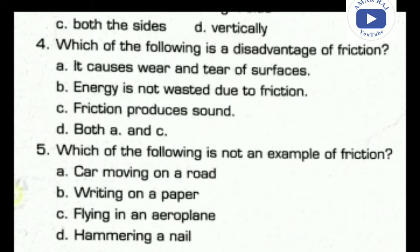Question number five: which of the following is not an example of friction? A car moving on road experiences friction. Writing on paper uses friction between the pen or pencil point and the paper. Option C is flying in an aeroplane — if we are inside the airplane, there is no direct involvement of friction. Option D is hammering a nail — a nail is stuck in a surface due to friction.